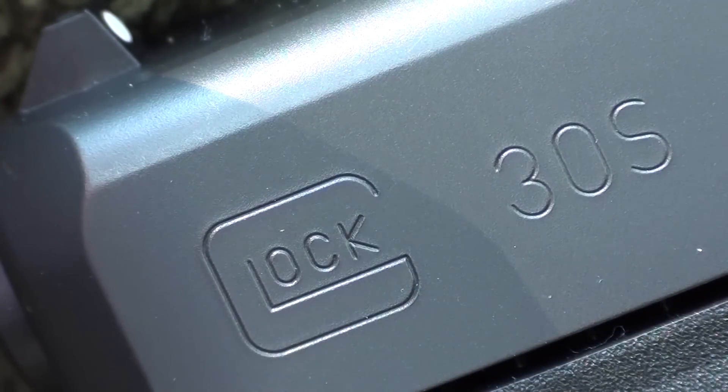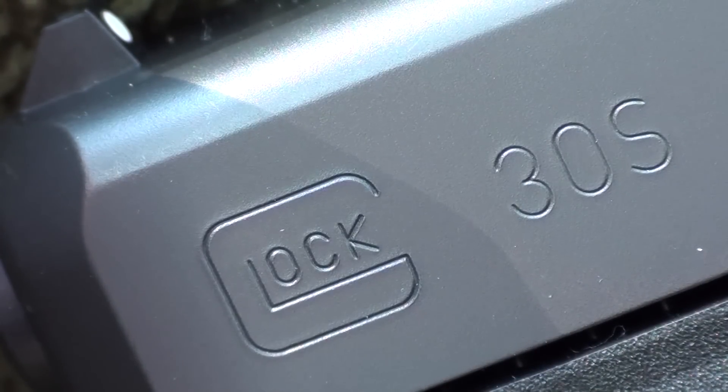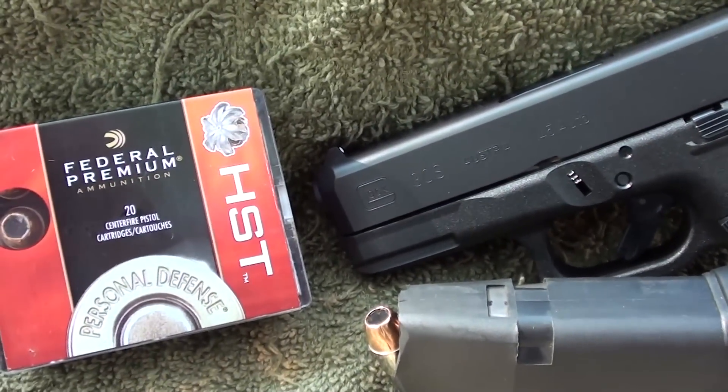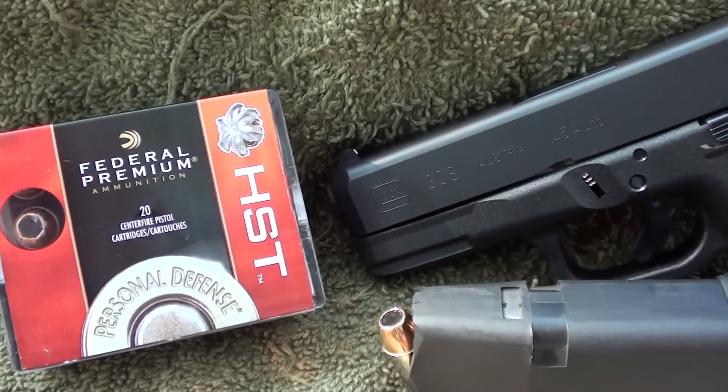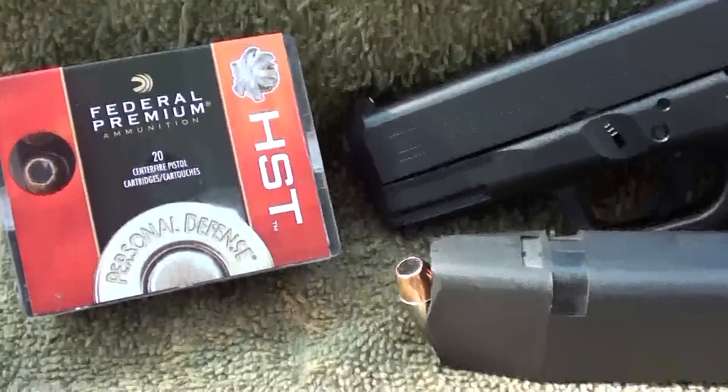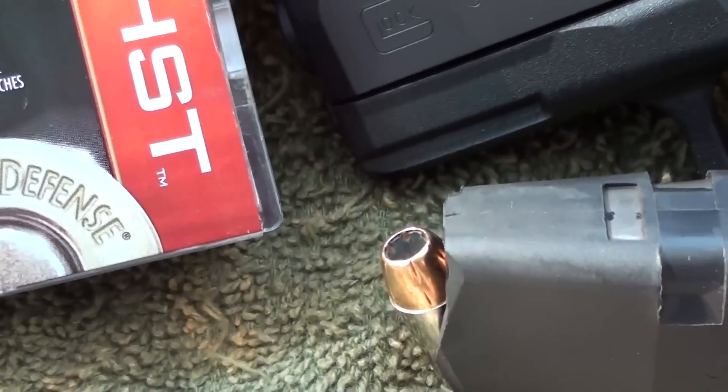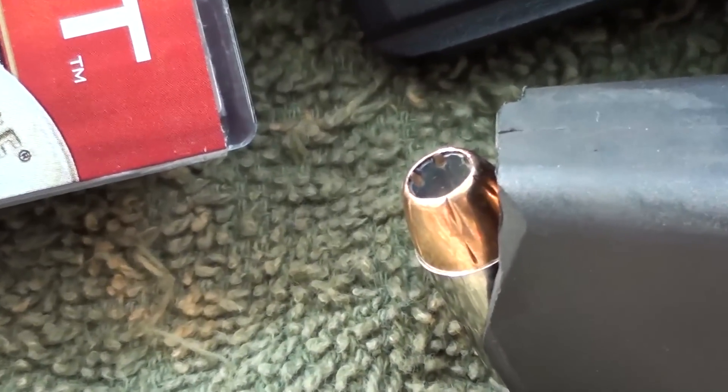Hey guys, we're going to start this 30s ballistics gel testing going on today, and what's going to be the first round we test it with. Let's test it with a badass round, the Federal HST 230 grain jacketed hollow point. Everybody knows this round's a badass. Let's see how this round does out of the 30s.